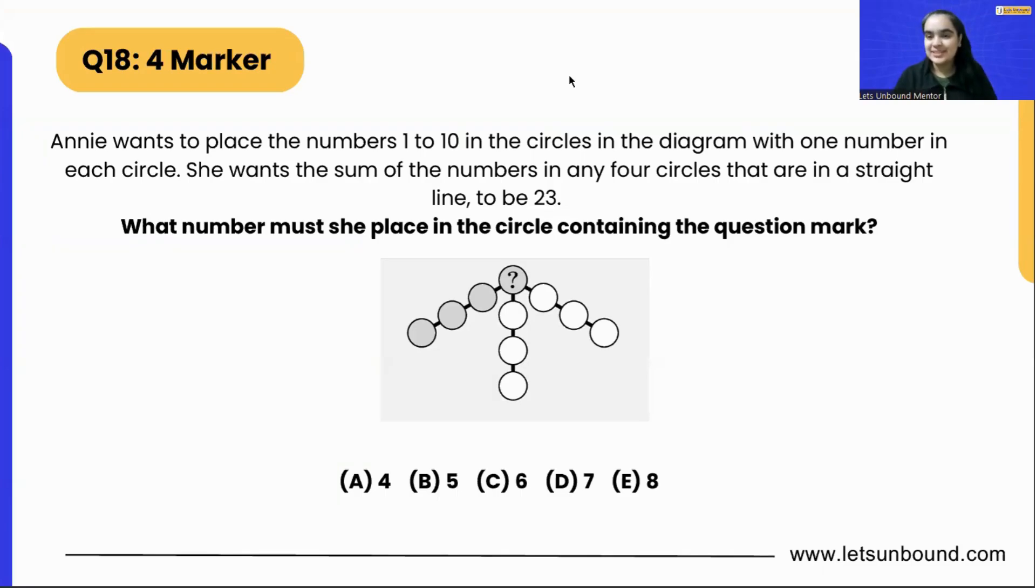Hello everyone, welcome to Let's Unbound. In today's video we are going to discuss the 18th problem that came as a four marker. Annie wants to place the numbers 1 to 10 in the circles in the diagram with one number in each circle.